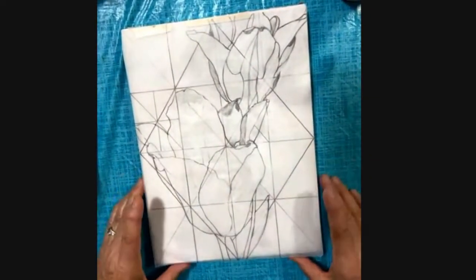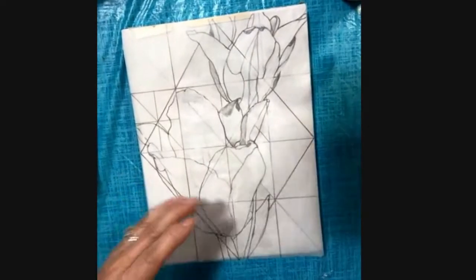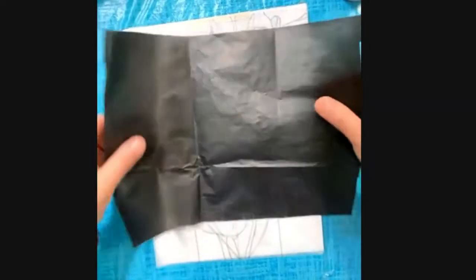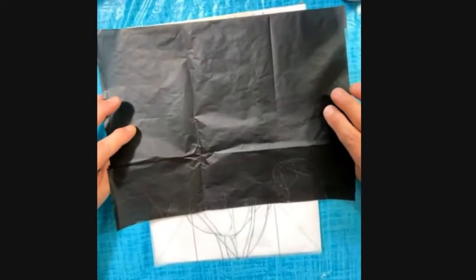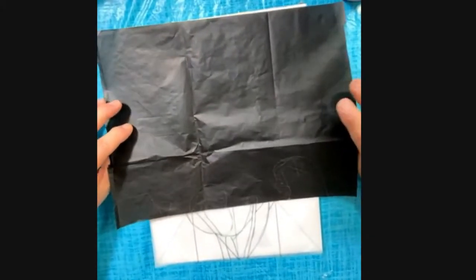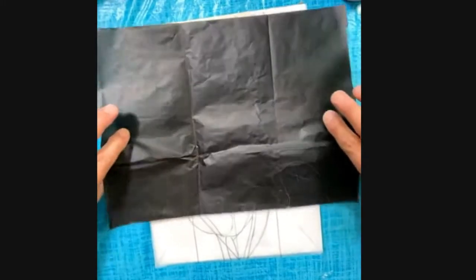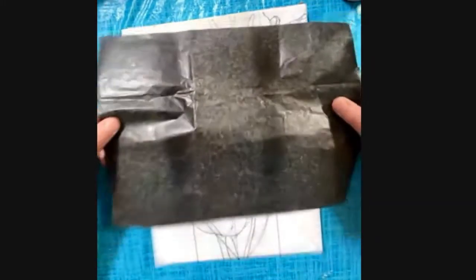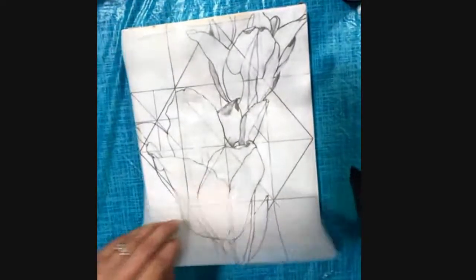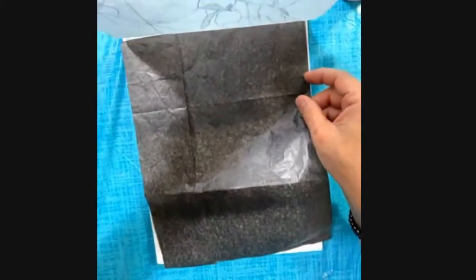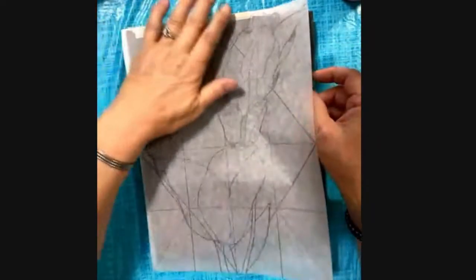That's it, because we are going to make a sandwich now. This is transfer paper. There's a lot of different transfer papers now available, which I think is wonderful, because when I first started using this method it was really hard to find. So one side is darker and as you can see the other side is lighter. You want the dark side down because that's the side that's going to transfer an image. If you do it wrong, you'll transfer the image to the back of your tracing paper.